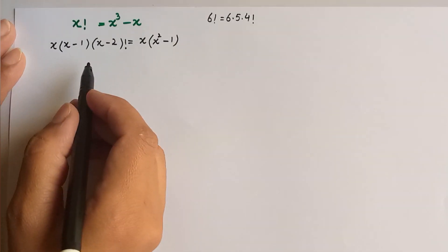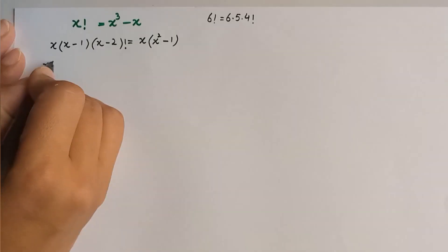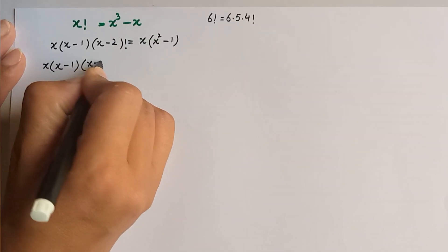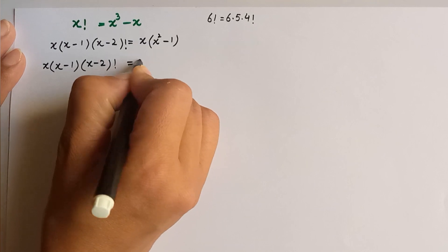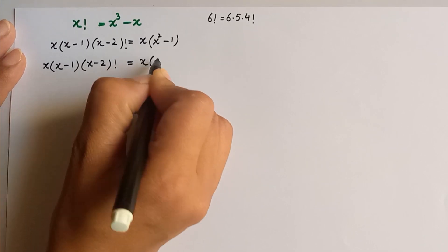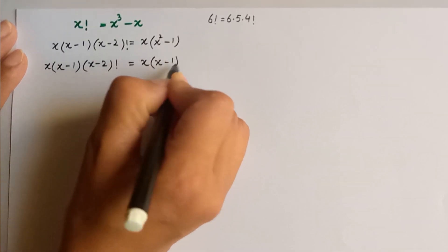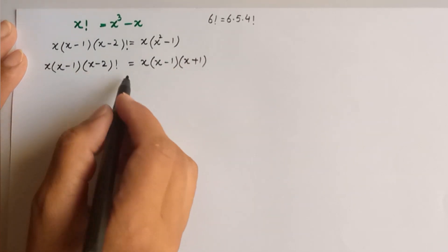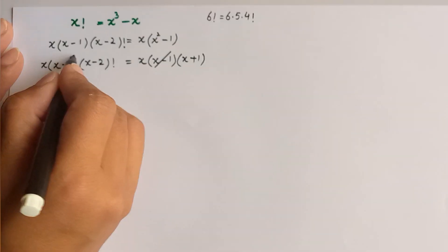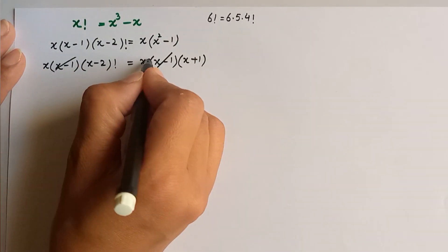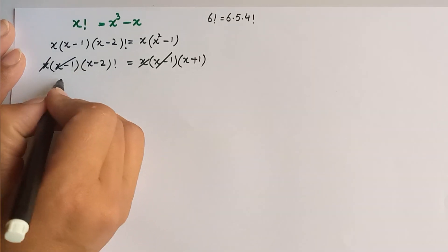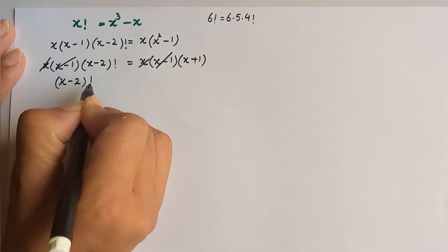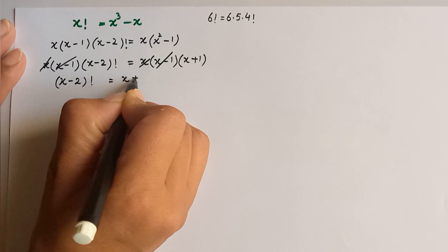Now we change x squared minus 1 using the identity: it can be written as (x minus 1) times (x plus 1). The (x minus 1) terms cancel out, and x cancels with x, so we are left with (x minus 2) factorial is equal to x plus 1.